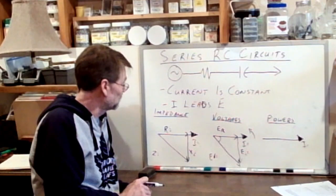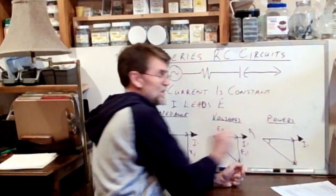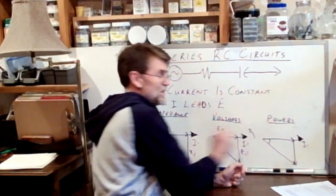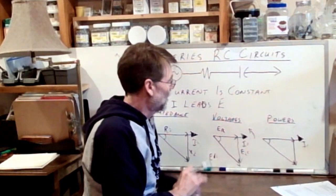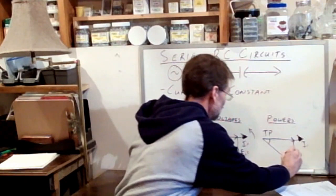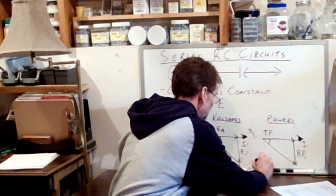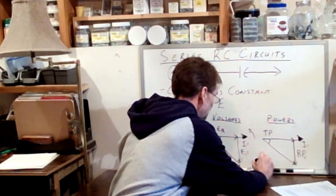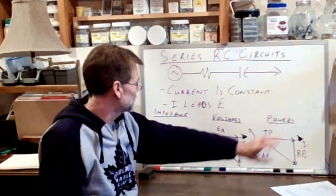Finally, the power triangle. We draw the same three vectors at the same angle. The power at zero degrees, in phase with the current, is our true power. The power at 270 degrees is our reactive power — subscript C — as a result of the capacitor. And the hypotenuse is AP, or apparent power. So those are our three triangles and all the variables we'll use to calculate the circuit once we have numbers.